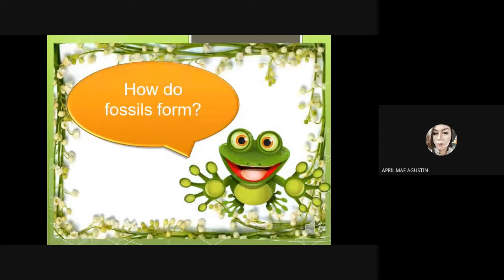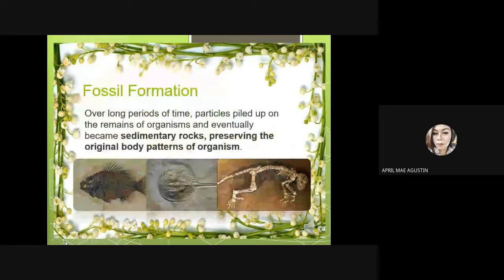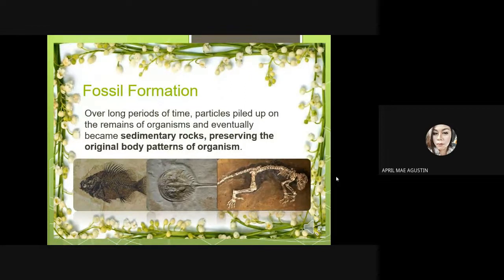How do fossils form? Over long periods of time, particles piled up on the remains of organisms and eventually became sedimentary rocks, preserving the original body patterns of organisms.